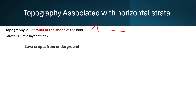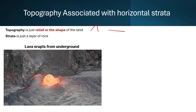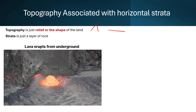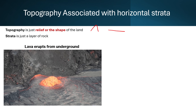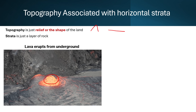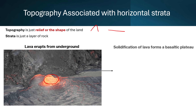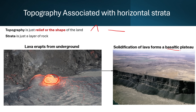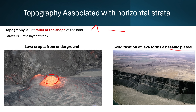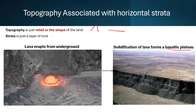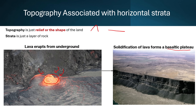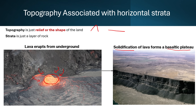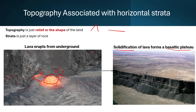It starts when lava erupts from underground — basically from a volcano. This lava comes from molten magma found deep under the Earth's surface. When the volcano erupts, this molten magma erupts and will eventually solidify, becoming solid and rigid, forming a mountainous-like shape. This is known as a basaltic plateau.